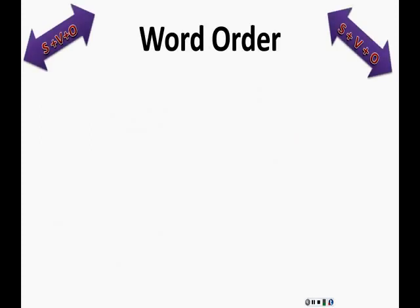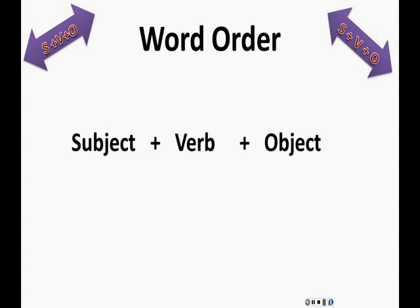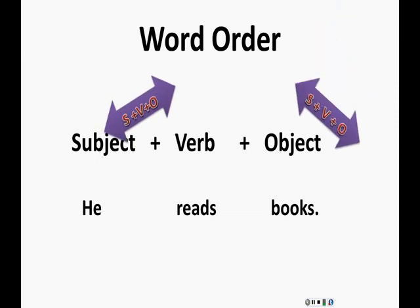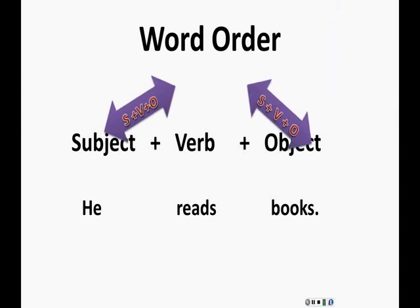In English, word order is very important. The word order is subject plus verb plus object. For example, this sentence says, he reads books. He is the subject, reads is the verb, books is the object. In English, sentences always happen in this order.